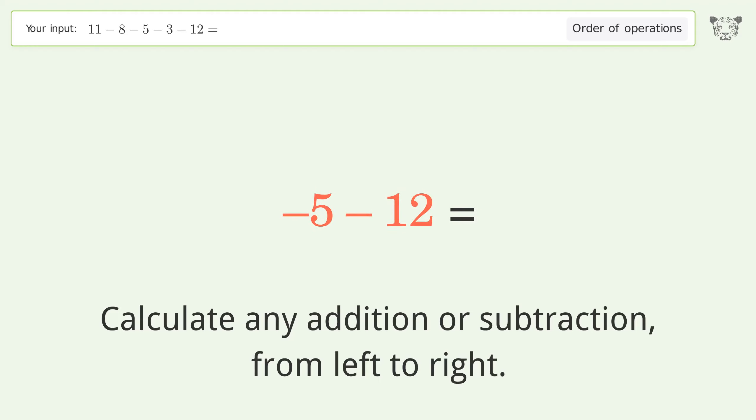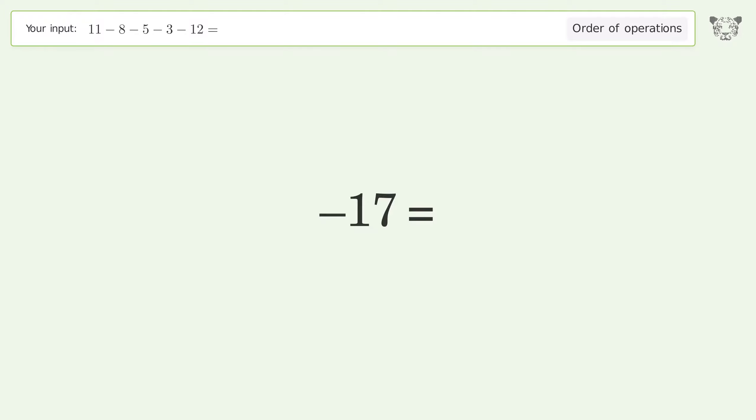Negative 5 minus 12 equals negative 17. And so the final result is negative 17.